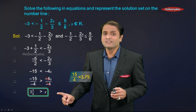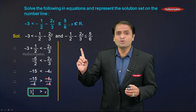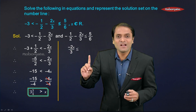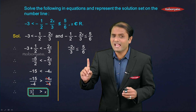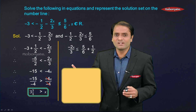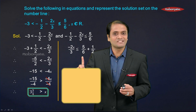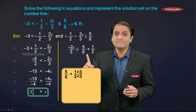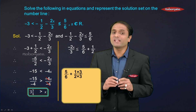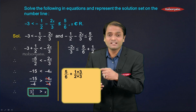Now let us solve the second inequation. Keeping −2x/3 on the LHS, I will transfer −1/2 to the RHS. On the RHS we already have 5/6, and −1/2 becomes +1/2. The LHS remains −2x/3. To add the fractions on the RHS, we need to equalize the denominators — the second denominator 2 must become 6, so we multiply its numerator and denominator by 3.